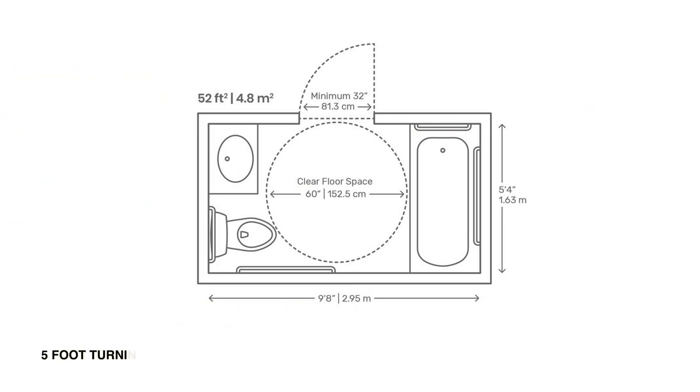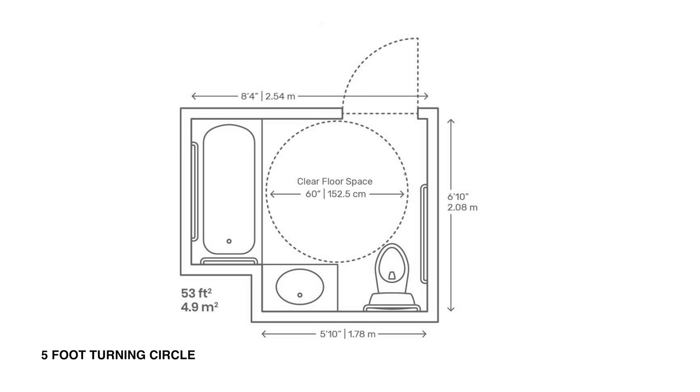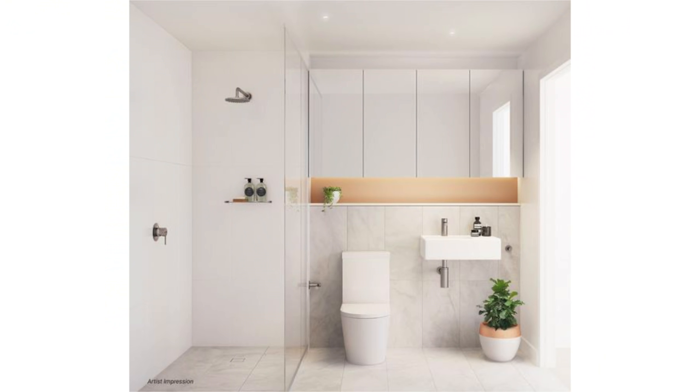The biggest challenge in designing a universal design bathroom is the overall size and space, because of what is known as the five-foot turning circle. It refers to the clear floor space required to turn around in the room if you were sitting in a wheelchair. If you're working with an existing space without that clear diameter, you'll want as much clear space as possible in front of key areas like the sink, toilet, and shower. A true universal design bathroom should have this five-foot turning circle requirement.